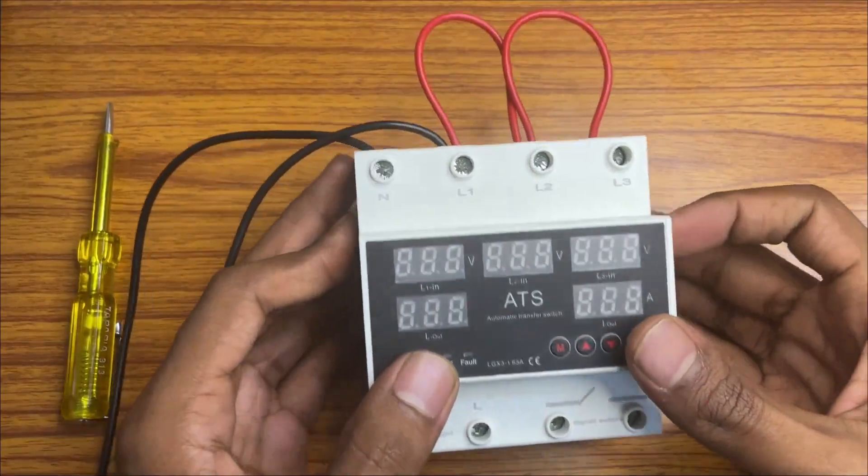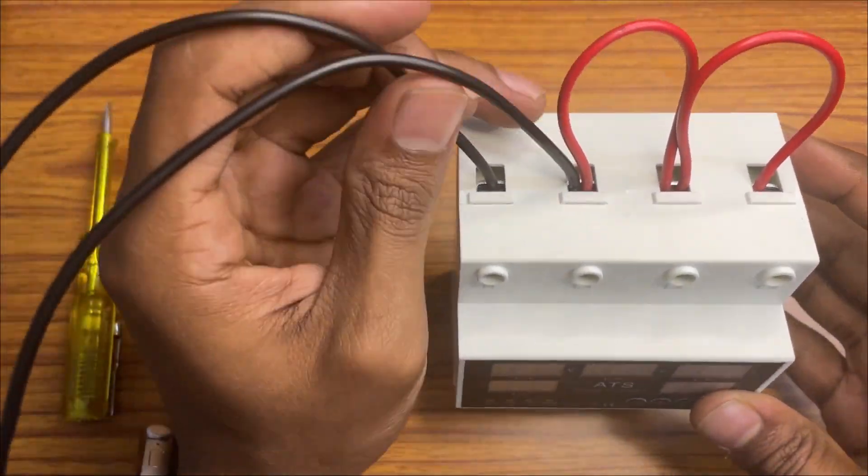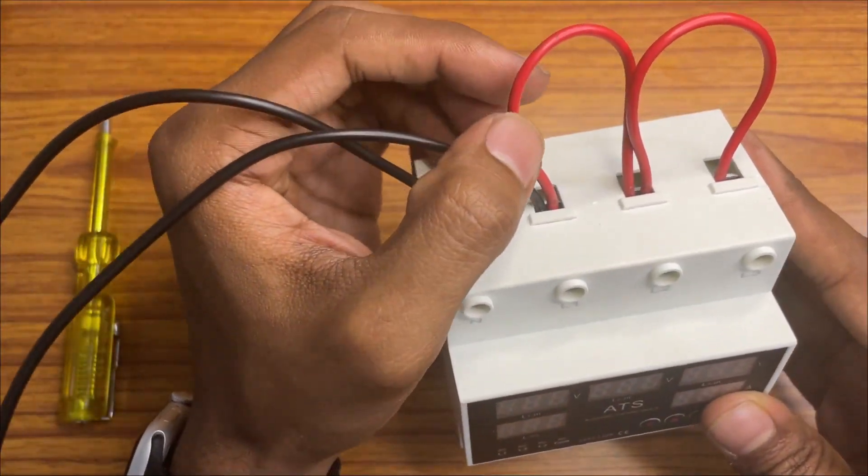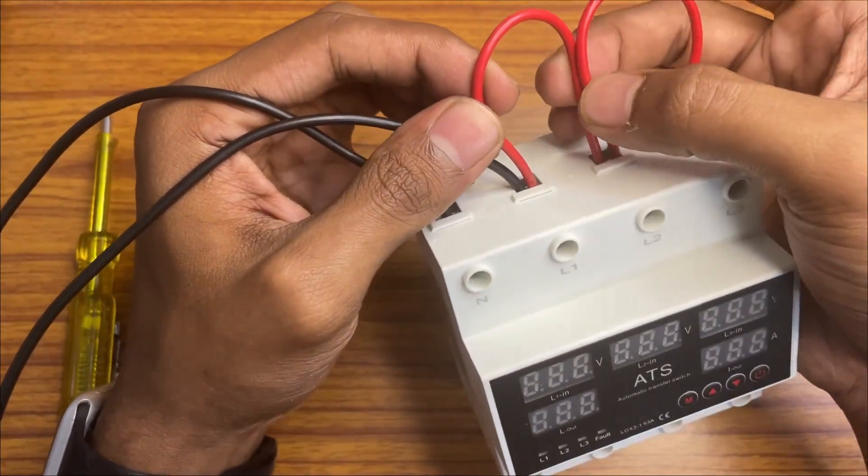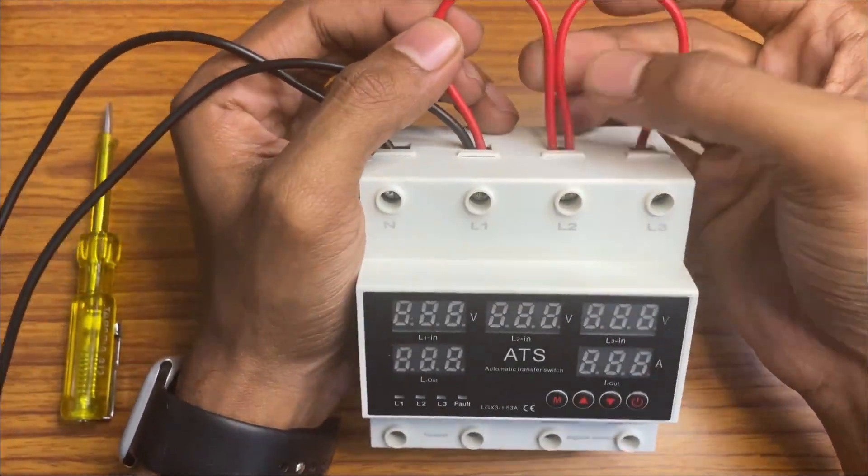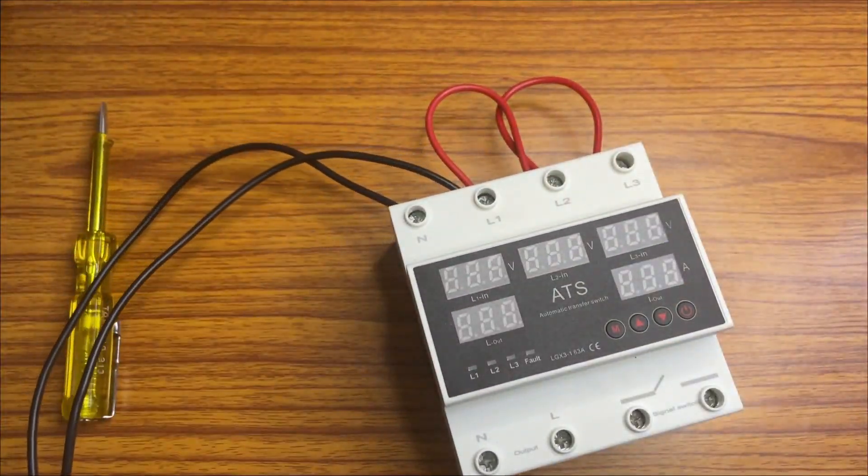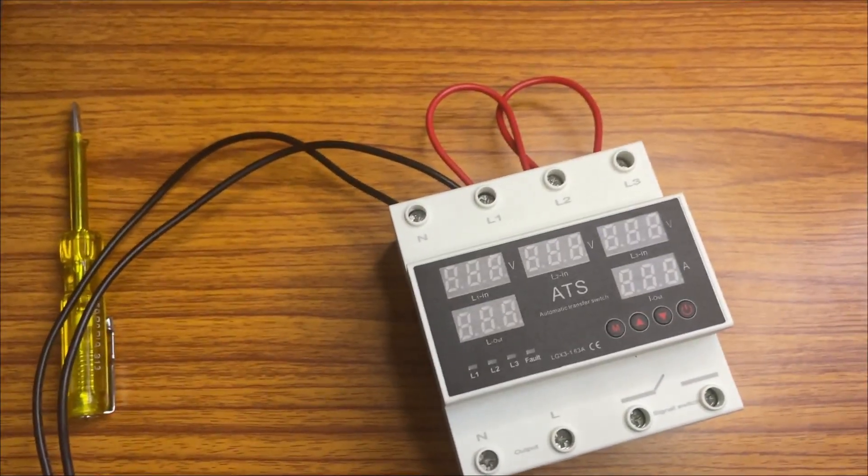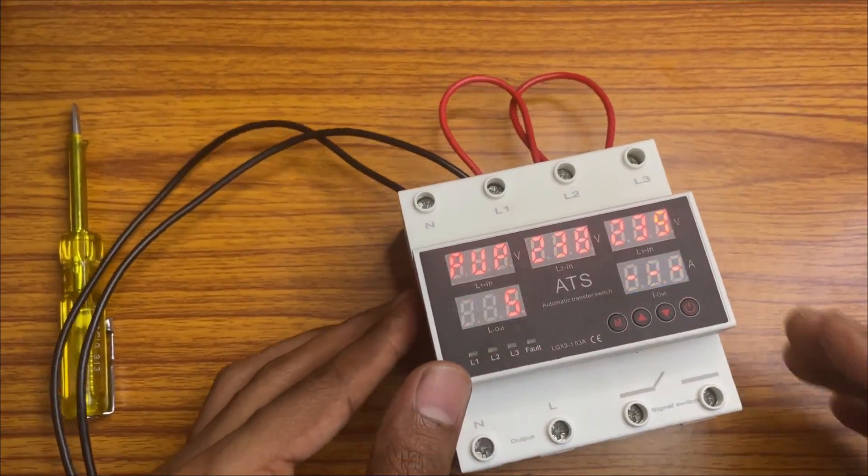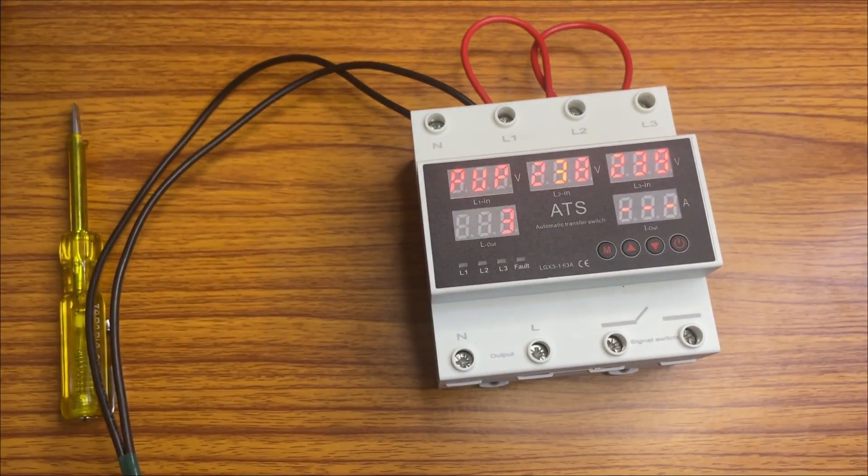I will show you the wiring diagram. See, this is neutral and line, and this is L1, this is L2, and this is L3. So let's give the connection. We have given the power.